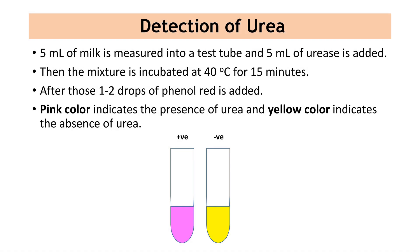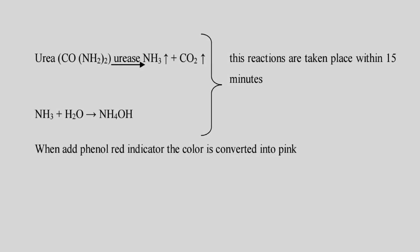Now let's see how to detect urea. For that, 5 ml of milk is measured into a test tube and 5 ml of urease is added. Then the mixture is incubated at 40°C for 15 minutes. After that, 1-2 drops of phenol red is added. Pink color indicates the presence of urea and yellow color indicates the absence of urea. Here you can see the chemical reaction: urea is converted to ammonia and carbon dioxide by urease, and the ammonia can be observed as ammonium hydroxide. These reactions take place within 15 minutes and when phenol red indicator is added, the color is converted to pink.